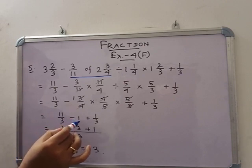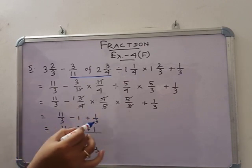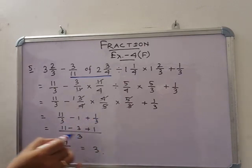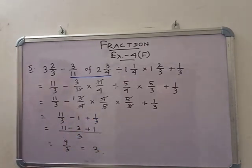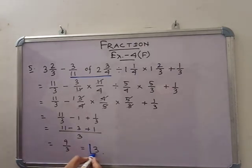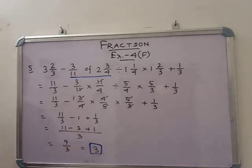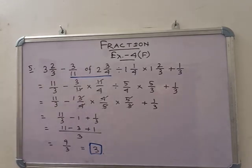So: 11 by 3 minus 1 plus 1 by 3. LCM is 3: 11 minus 3 plus 1, that means 9 by 3, that is 3. So 3 is the answer.